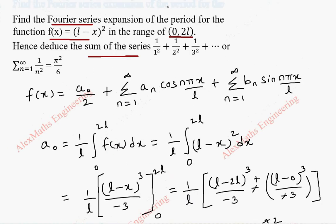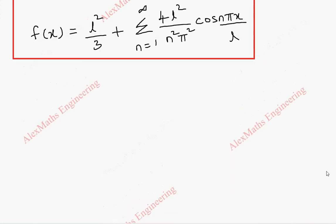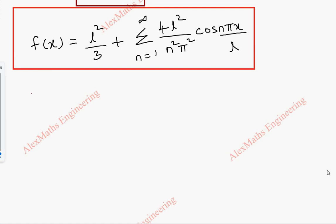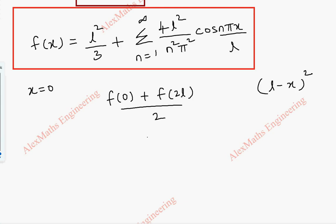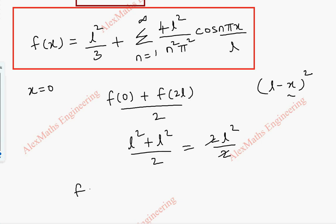As a second part we are going to find the sum of the series. For that we take x = 0. Since it is an extreme point, the function value is [f(0) + f(2L)] / 2. Our function is (L − x)². When I put 0 we get L². When I put 2L, L − 2L = −L, squared gives L². So totally 2L²/2 = L².